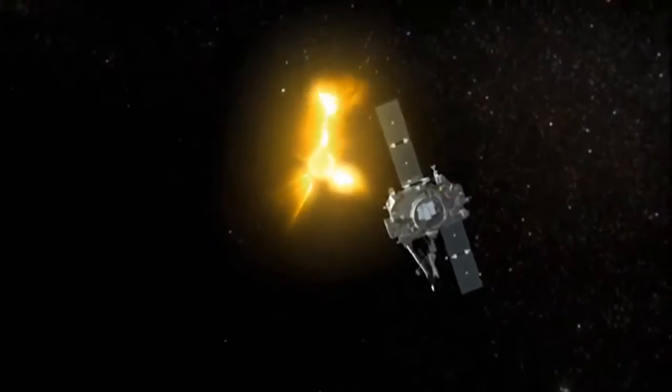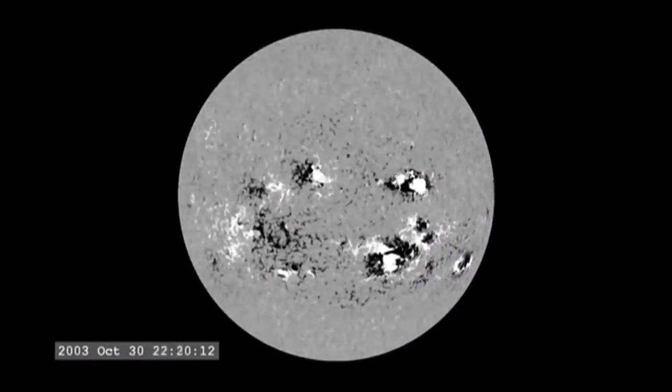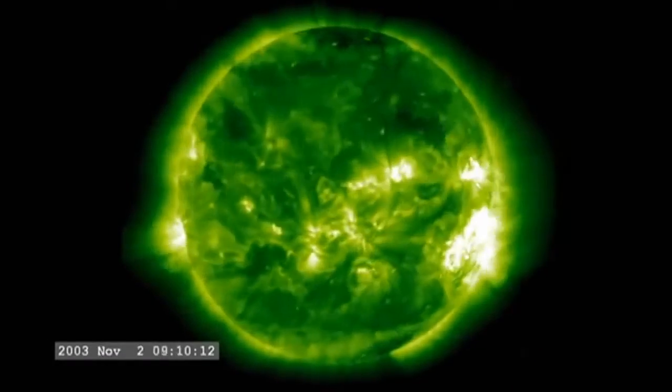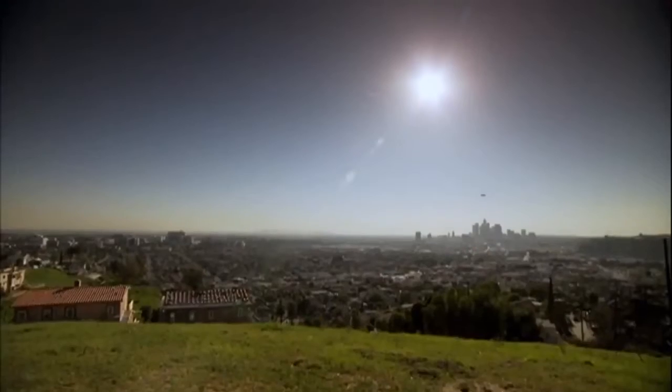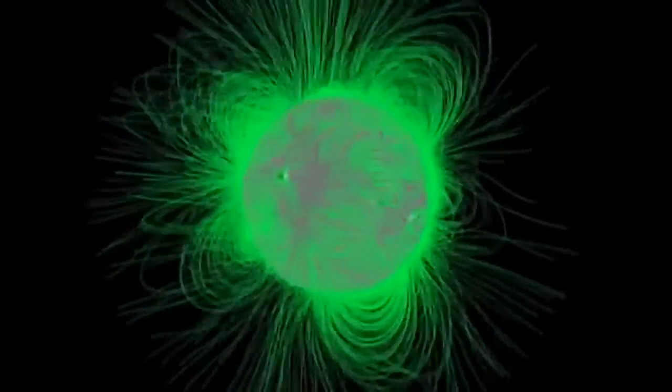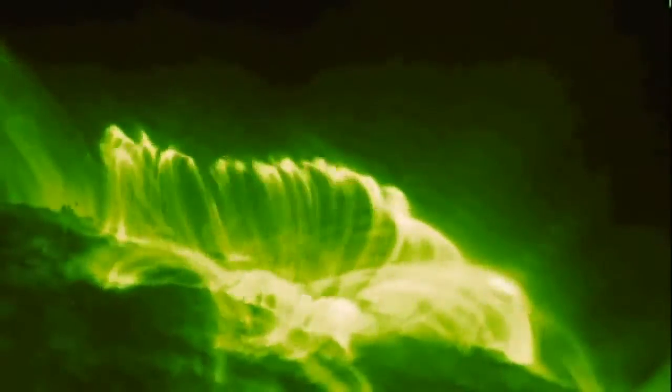When there are lots of sunspots, there are lots of flares and coronal mass ejections. Increases in solar activity enhance the connection between sun and earth. Energy expelled from the sun can create disturbances in the near-earth environment. The earth is embedded in the solar atmosphere, and so what happens on the sun affects the earth, and that's what we call space weather. Accurate space weather forecasting is the ultimate goal, but this can be hard. The sun is turbulent, especially during solar maximum, the peak of solar storm activity.